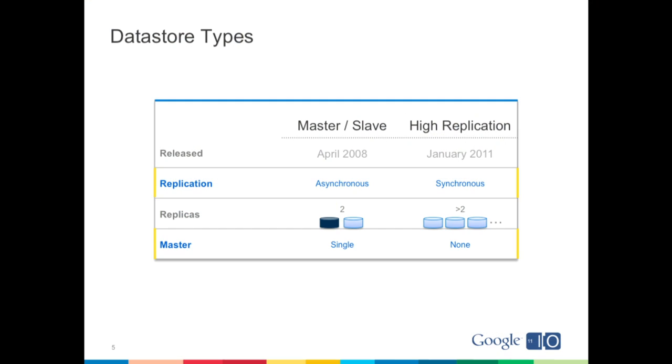The Datastore comes in two flavors. The Master-Slave Datastore is what we launched with in April of 2008. It uses asynchronous replication from a master to a slave. Since it has a master, all writes and reads go to a master and then are replicated to a slave. High Replication, on the other hand, was released this January. It synchronously writes to greater than two replicas and has no master, so it's true multi-homing in that you can read and write from any replica.